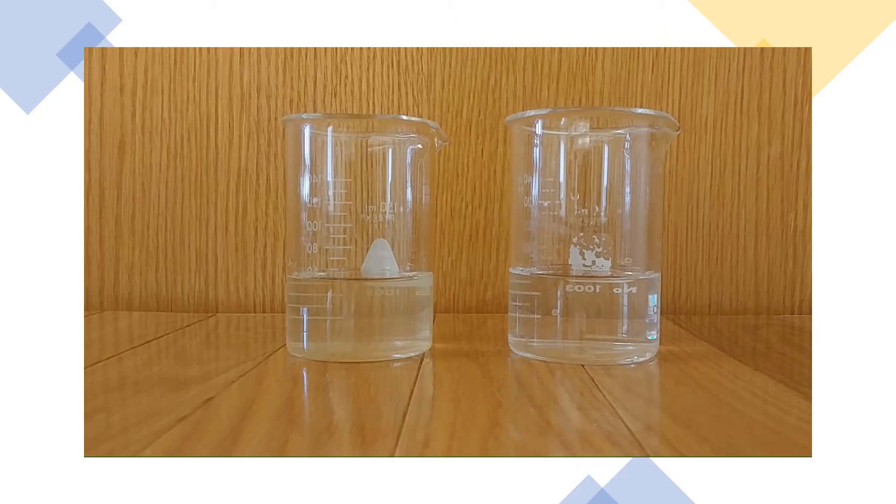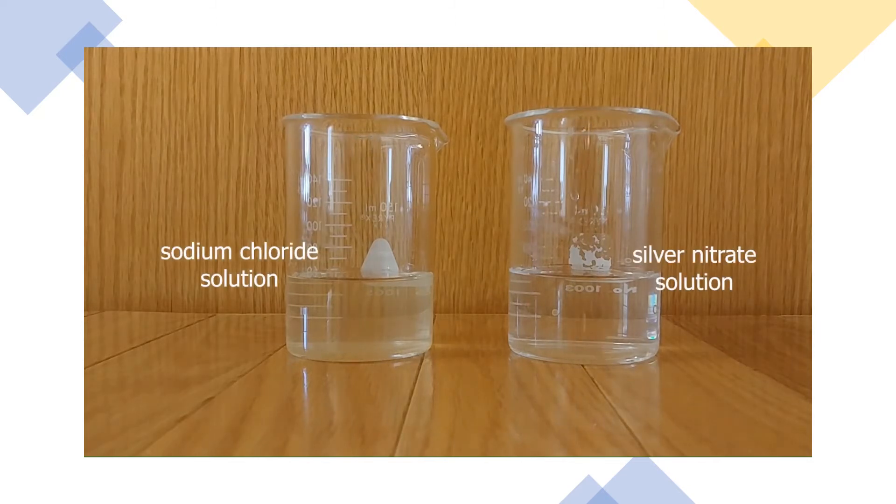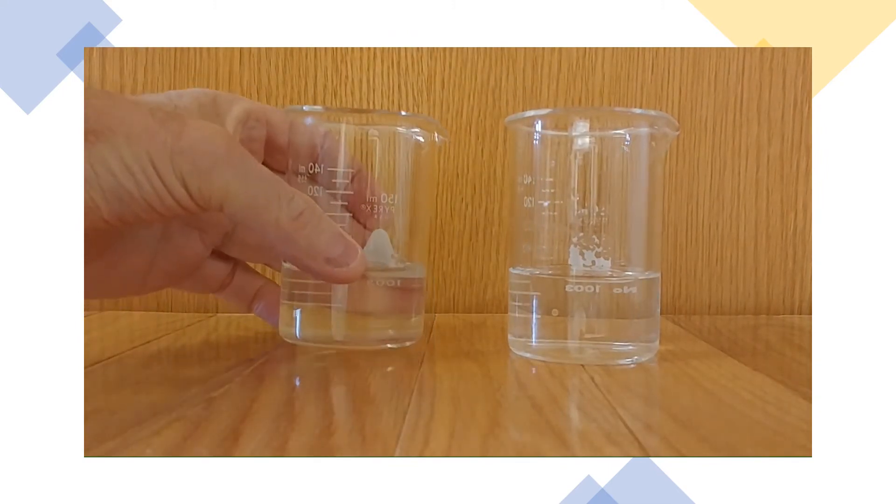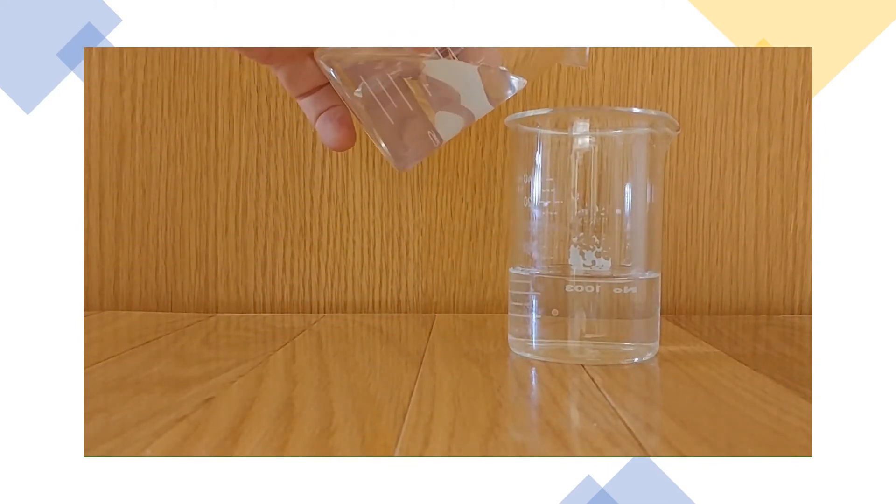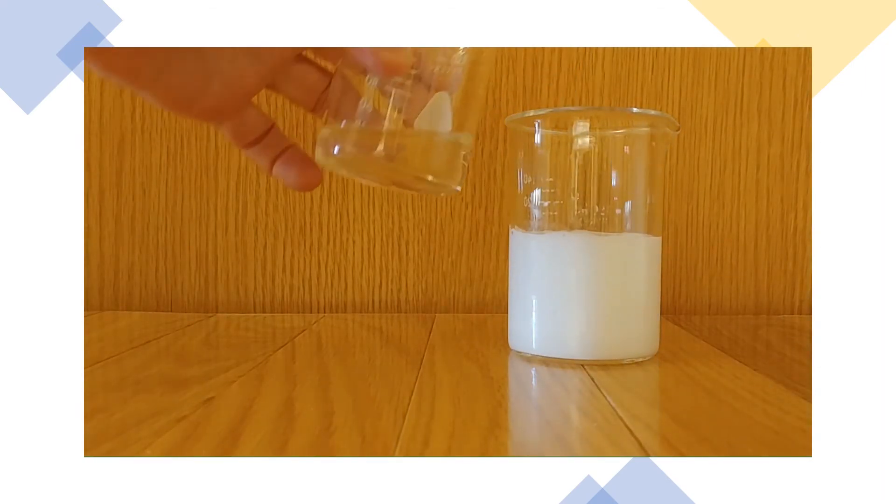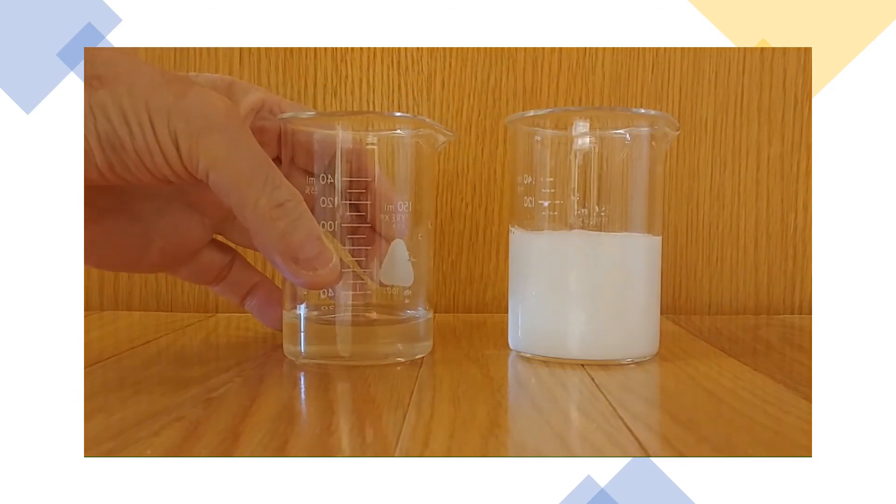Here we have two colorless solutions, a solution of sodium chloride on the left and a silver nitrate solution on the right. Let's mix them. When we do, you can clearly see a cloud of white solid particles forming.